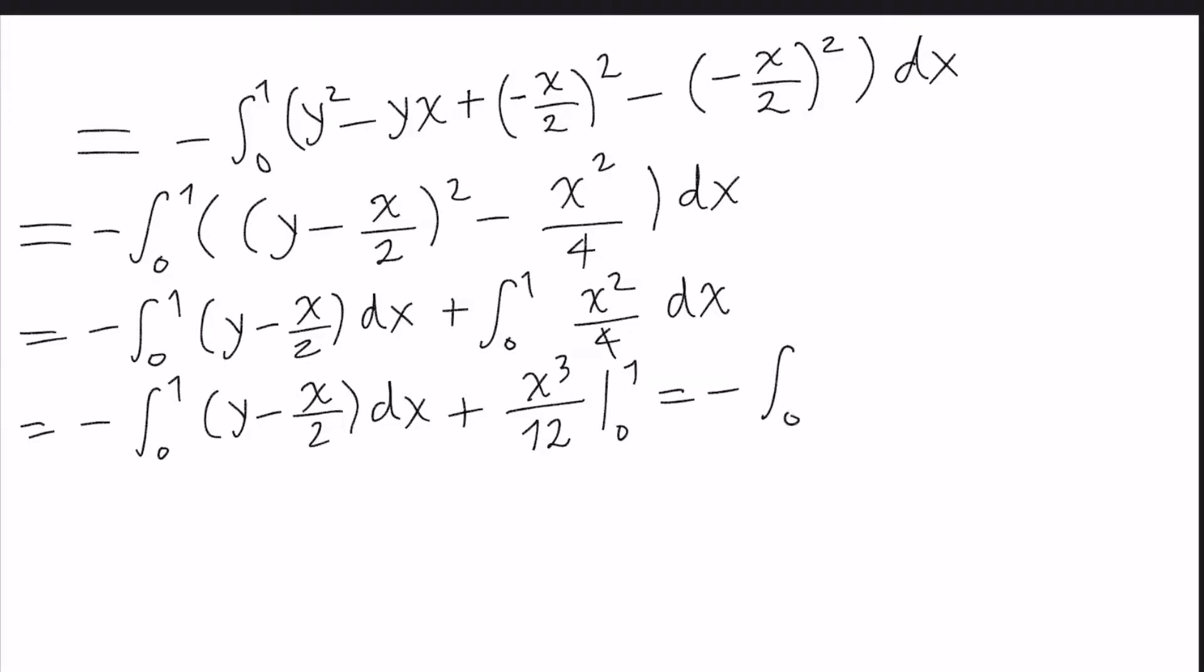This is minus integral from 0 to 1 of (y - x/2) squared dx, plus 1 divided by 12, and this is equal to 1 divided by 12. So what does it mean? It means that the minus integral from 0 to 1 of (y - x/2) squared dx must be equal to 0.